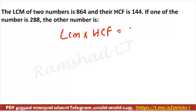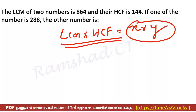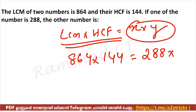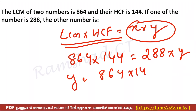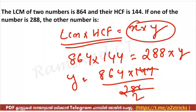So: 864 into 144, divided by 288, equals 432. The answer is 432. Find a number which when divided by 10 leaves a remainder of 9.